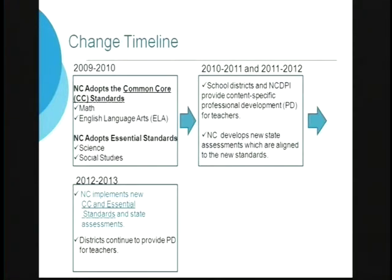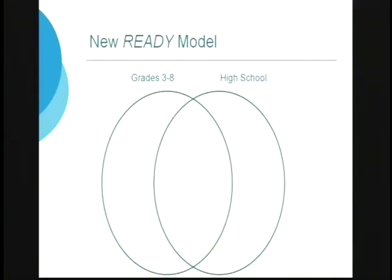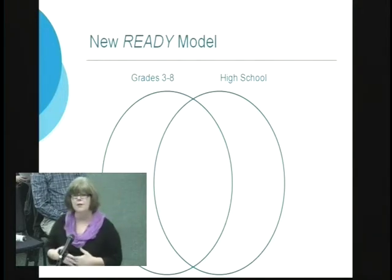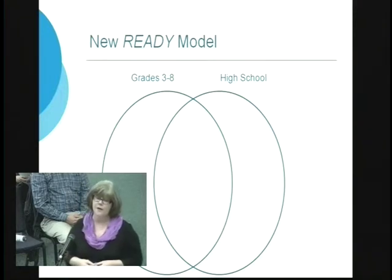Districts are continuing to provide professional development. Many schools have formed small professional learning communities at the school level to become more involved and learn more about the content. The new accountability model is called the Ready Model. We used to call it the ABC model, starting in 1996. The ABC model focused on basic skills; the Ready Model focuses on getting kids ready for career and college.